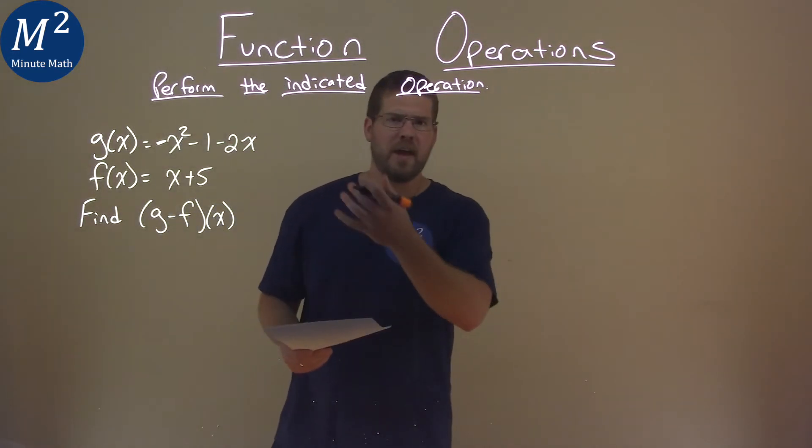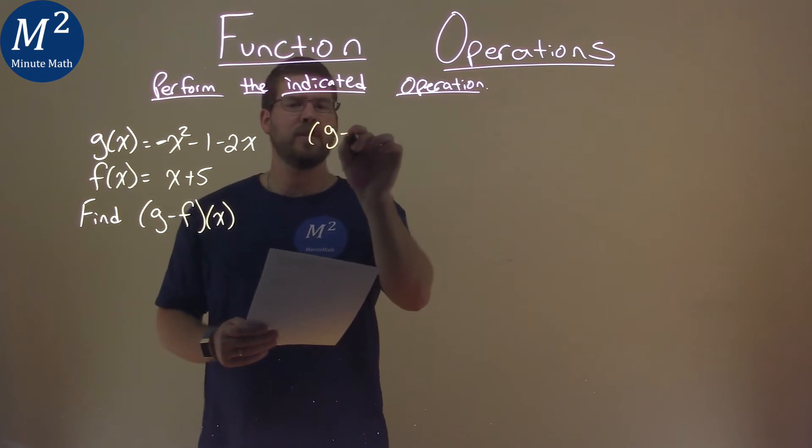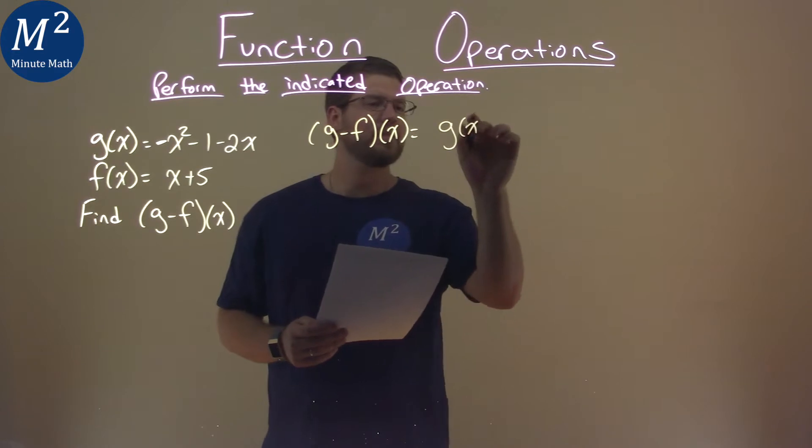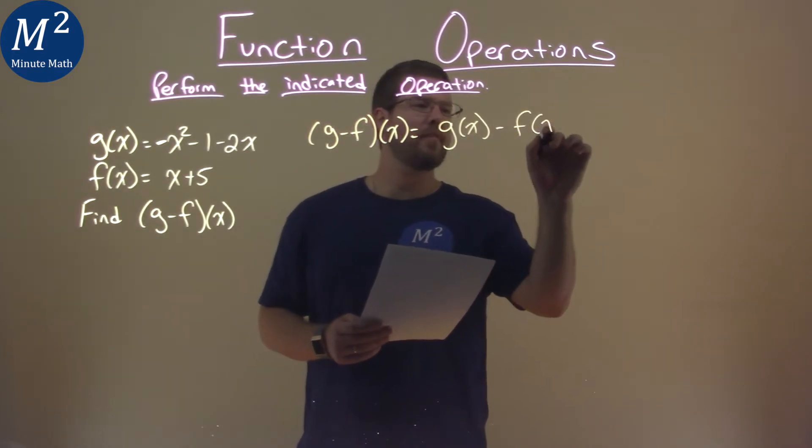But what is g minus f of x? That's g minus f of x here is equal to g of x minus f of x.